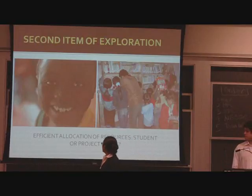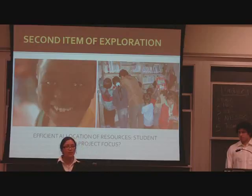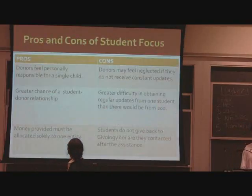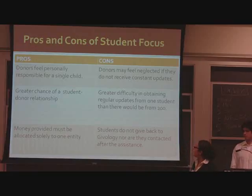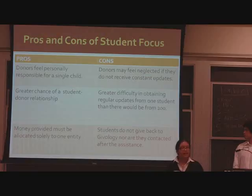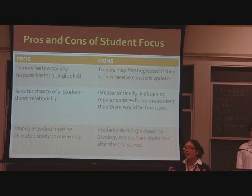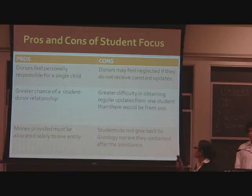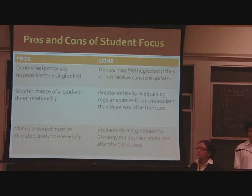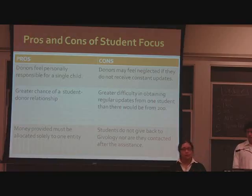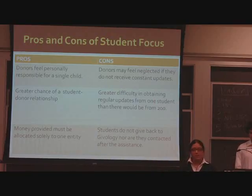The second area of exploration is the efficient allocation of resources — whether we should be allocating resources to projects or to individual students. We divided this into a pros and cons table. The pros of student focus are that donors feel personally responsible for a single child, and there is a personal connection between the donor and the individual student. However, the cons are that donors may feel neglected without constant updates, there is greater difficulty obtaining regular updates from one student, and students do not seem to give back in the long run after receiving a single monetary contribution.